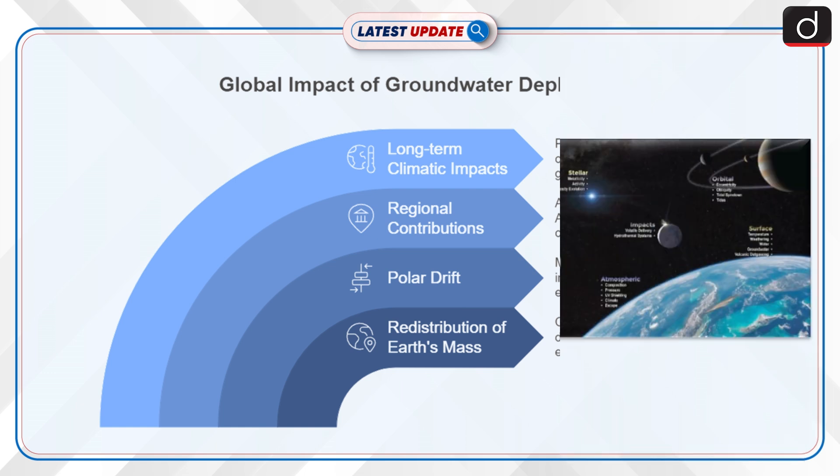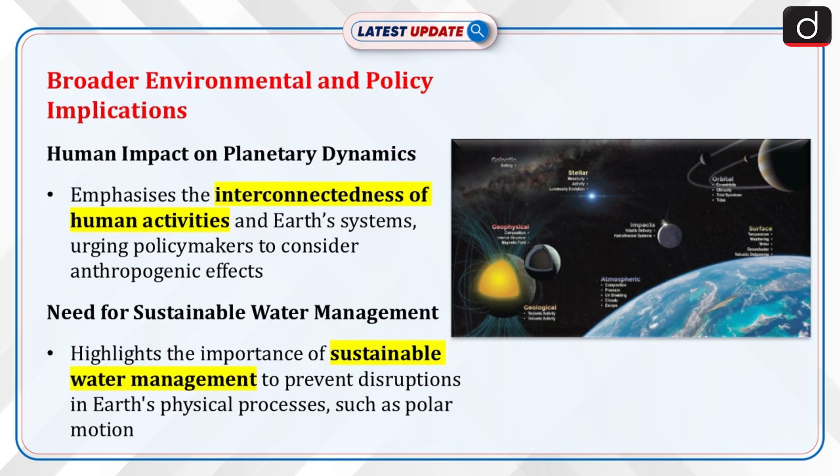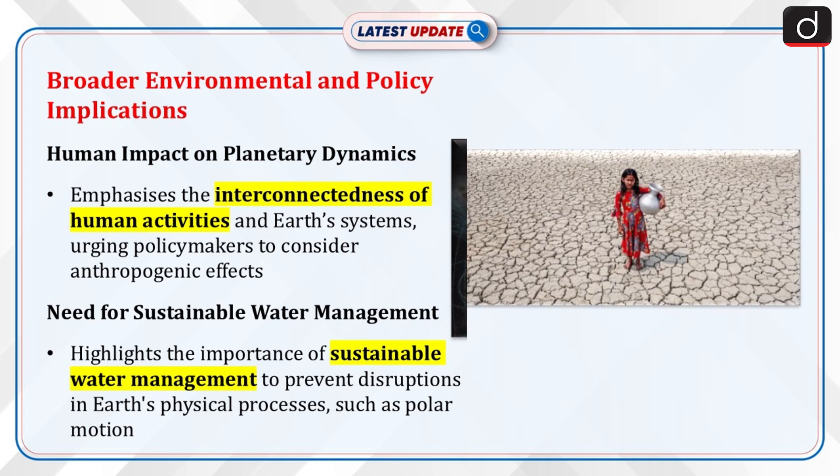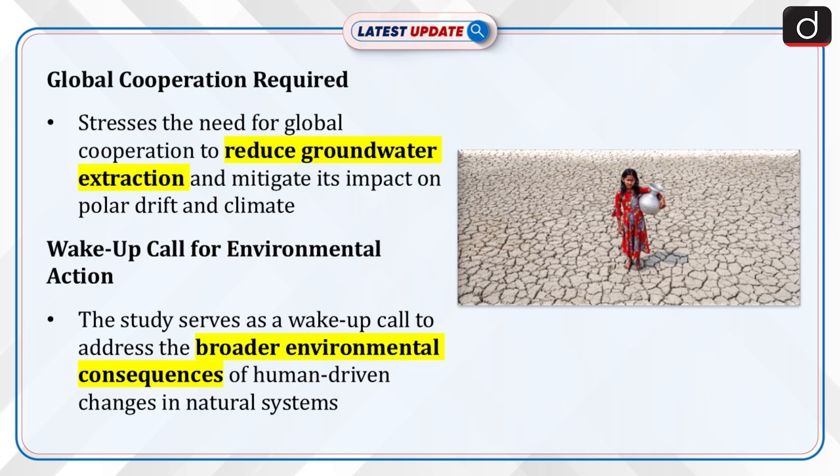Broader environment and policy implications: the findings emphasize the interconnectedness of human activities and planetary dynamics, urging policymakers to consider anthropogenic impacts on Earth's systems. It underscores the importance of sustainable water management strategies to prevent further disruption in Earth's physical processes such as polar motion. Global cooperation is needed to reduce groundwater extraction, which could help alter the trajectory of polar drift and mitigate future climatic impacts. This study serves as a wake-up call to address the broader environmental implications of human-driven changes in natural systems.